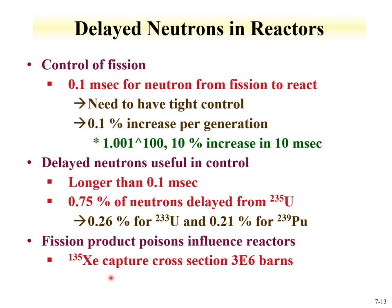Some fission products also have a negative influence on reactors by absorbing neutrons. For example, xenon-135, a fission product, has a very large neutron capture cross-section of 3×10^6 barns. Buildup of this isotope in reactors can actually poison the reactor and shut down the fission process, as the increasing xenon-135 captures more and more neutrons.